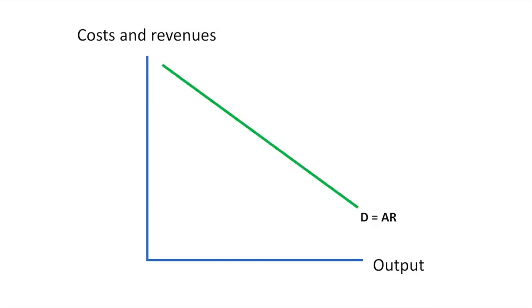In an imperfectly competitive market, firms face a downward sloping demand curve. We'll add in our marginal revenue, marginal cost and average cost curves.